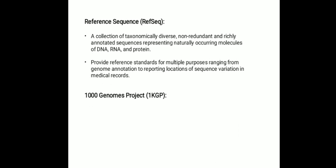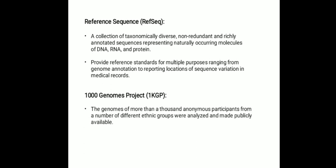The Thousand Genomes Project, abbreviated as 1KGP, was launched in January 2008. The genomes of more than a thousand anonymous participants from a number of different ethnic groups were analyzed and made publicly available. The Thousand Genomes Project ran between 2008 and 2015, creating the largest public catalog of human variation and genotype data.